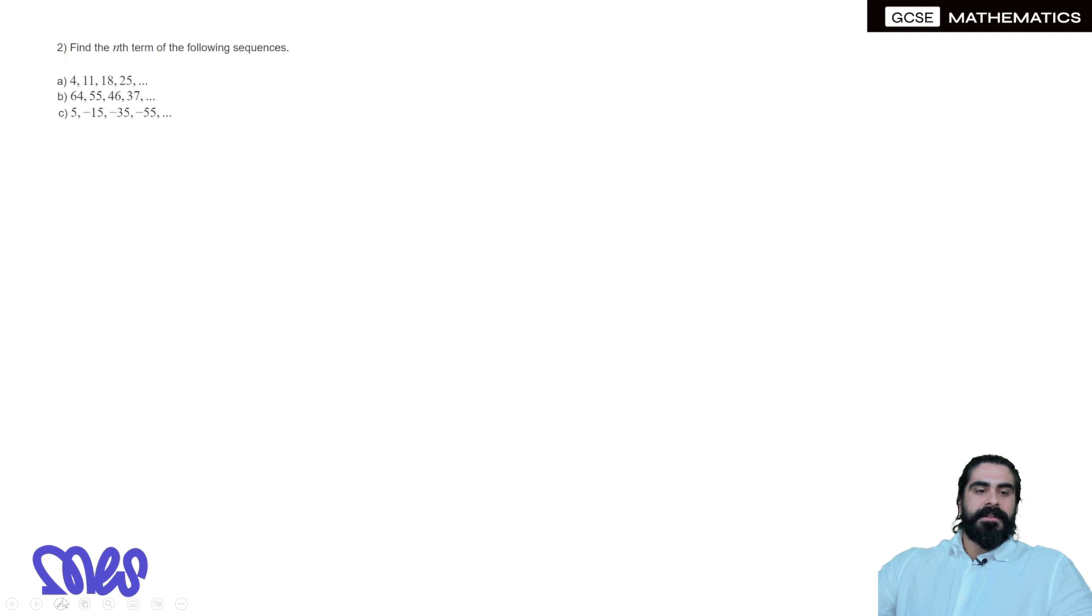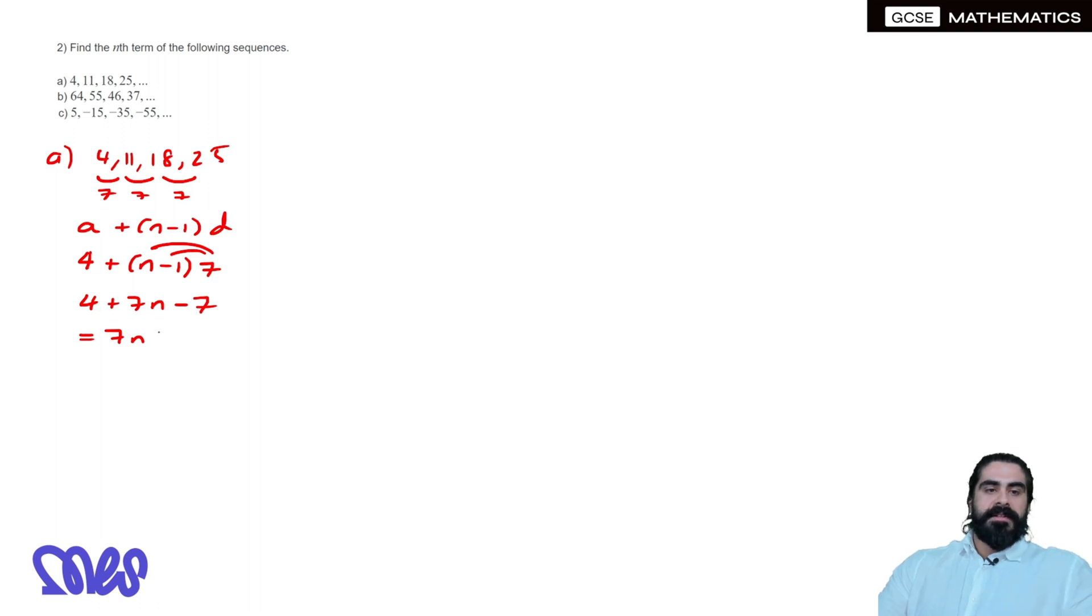Find the nth term of the following sequences, so for part A we have 4, 11, 18, 25, now we can see that it's going up in 7's. So remember the nth term is A plus N-1 D, A is the first term, 4 plus N-1 and D is 7, we just multiply that in, so 4 plus 7N minus 7, so we get 7N and then 4 minus 7 is minus 3.